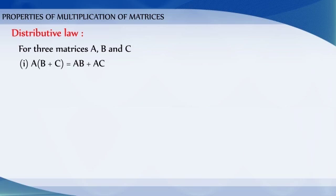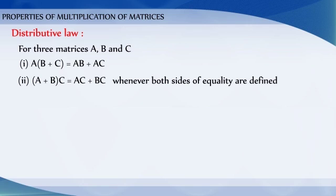Distributive law: For three matrices A, B and C, we have A(B + C) = AB + AC and (A + B)C = AC + BC, whenever both sides of equality are defined.